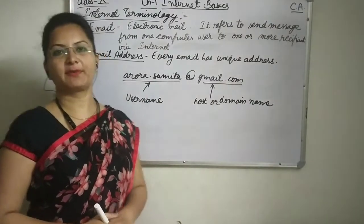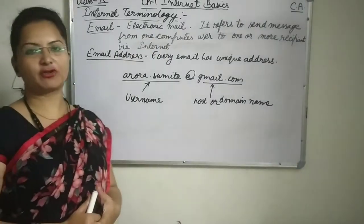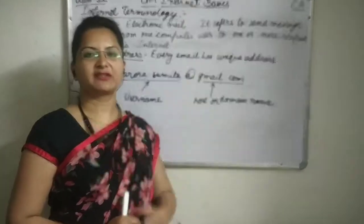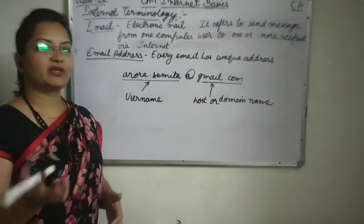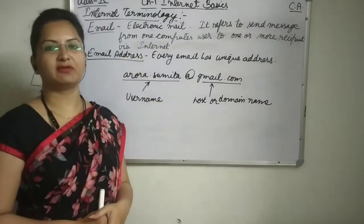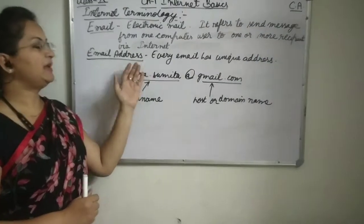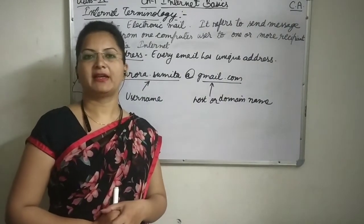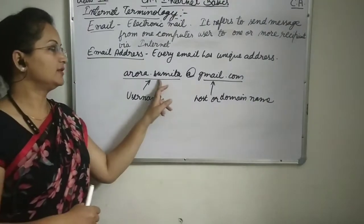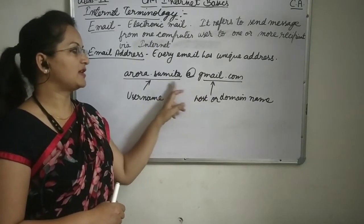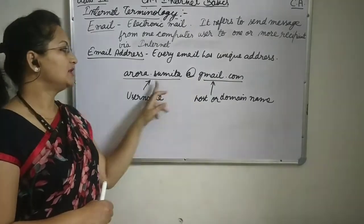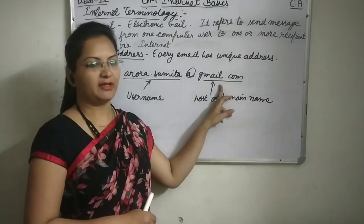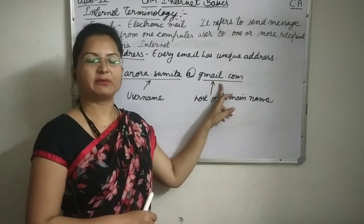In internet terminologies, we will discuss about emails. Emails are actually electronic mails. We can send messages from one computer user to one or more recipients. We should know their email addresses for it, and it can be sent with the help of a network — mostly the internet. Every email has a unique address. An email address has two parts separated by the at-the-rate symbol. The first part is the username, then the at symbol, and then you will see the host or domain name — the host on which you created your email address.